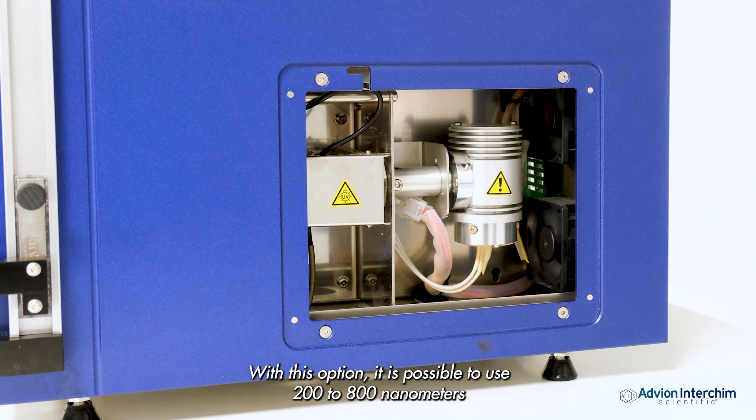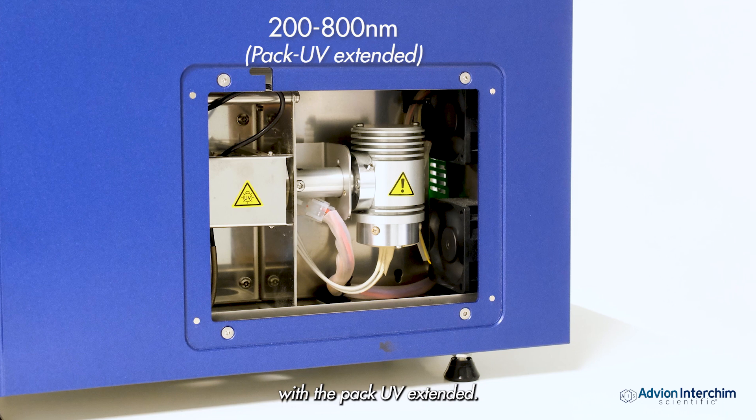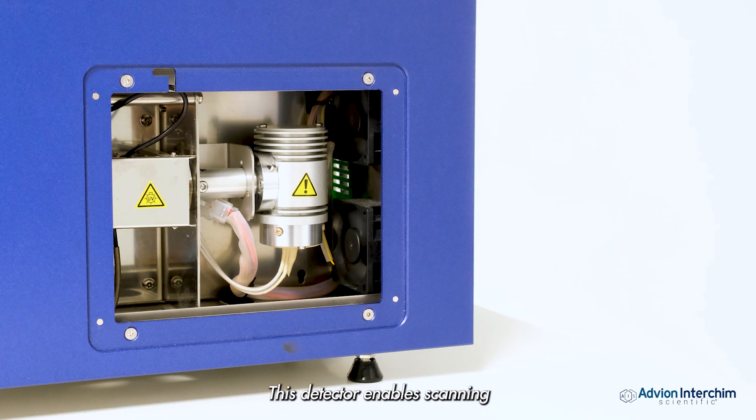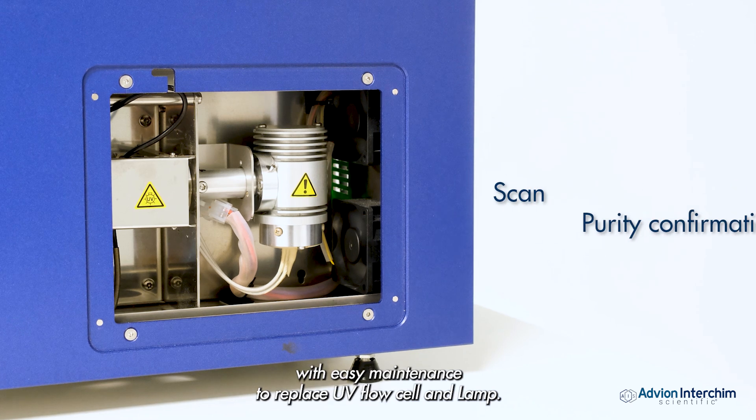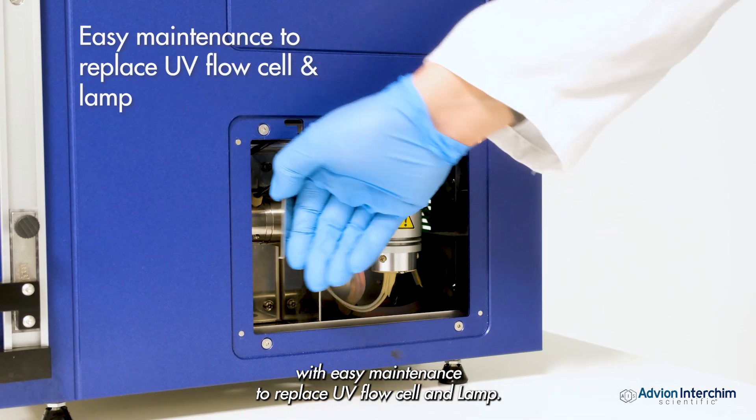With this option, it is possible to use 200 to 800 nanometers with the UV extended pack. This detector enables scanning to obtain purity confirmation with easy maintenance to replace the UV flow cell and lamp.